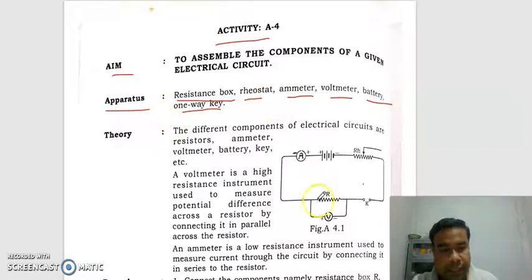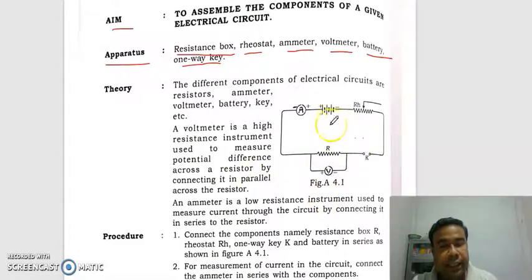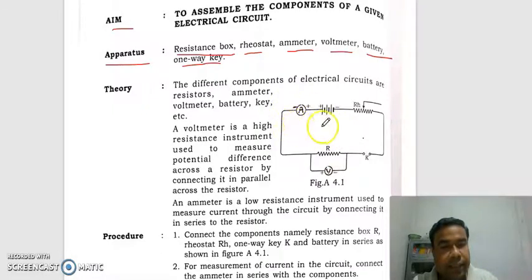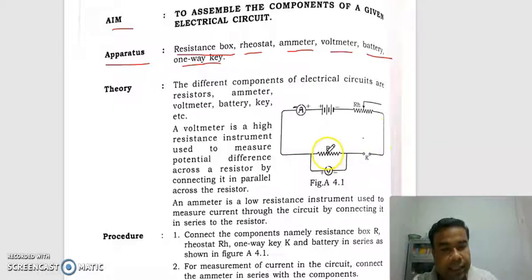You see the diagram — this is an electrical circuit. First you collect all these requirements. After that you connect them as shown in the figure. This is emitter, this is battery, this is rheostat, this is one-way key, this is resistance, and this is volumeter.